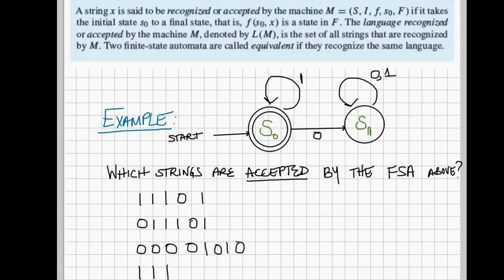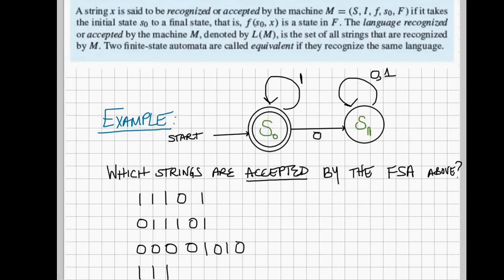Let's begin by asking which of the following strings are accepted by this finite state automata. Let's just start with the very first string, 1, 1, 1,